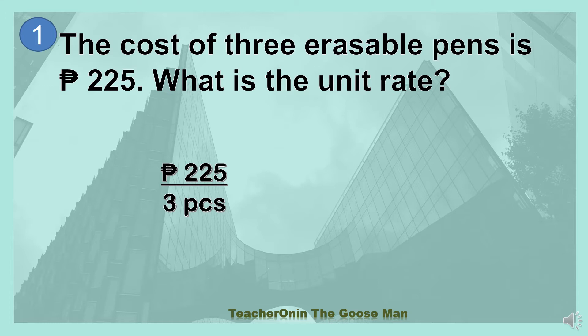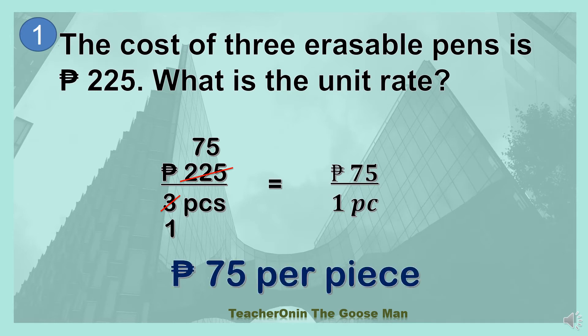I'll divide both numerator and denominator by three. So 3 divided by 3 is equal to 1, and 225 divided by 3 is equal to 75. Then I can write this as 75 pesos all over one piece. So the unit rate is 75 pesos per piece.